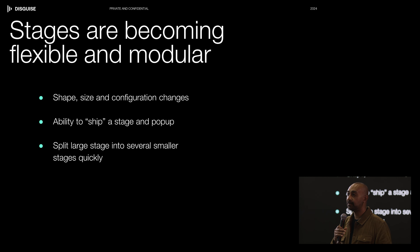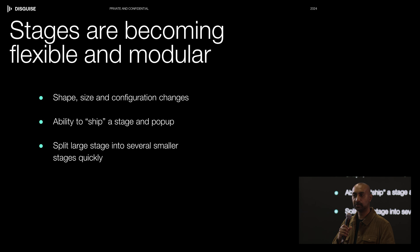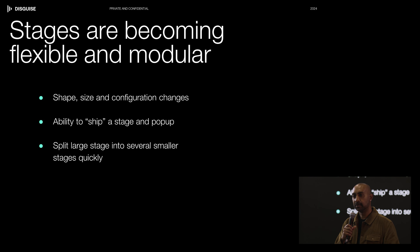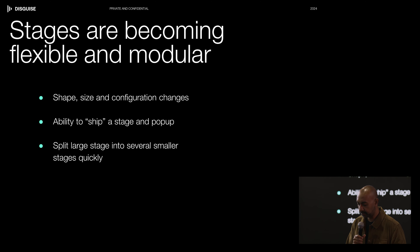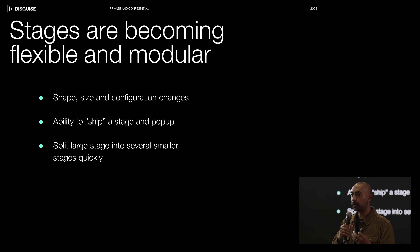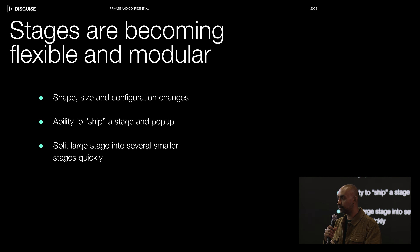While you're building a stage, you're not committing to the shape and size of it. Stages have to be flexible and modular. That means if you have to change the curve to a flat wall, add a floor, delete the ceiling, or add more tiles to make a horseshoe shape, you can do these things very quickly with today's technology. LED tiles, LED processors, and media servers are all evolving to become more flexible and modular.